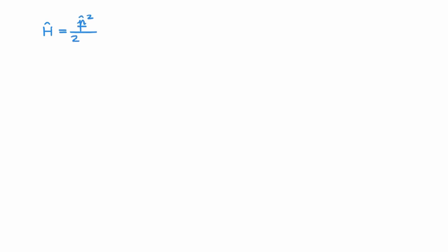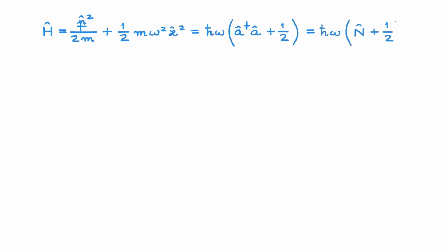The Hamiltonian operator for the quantum harmonic oscillator is given by the kinetic energy, which is proportional to the momentum squared, plus the potential energy, which is proportional to the position squared. We can also rewrite this Hamiltonian in terms of the ladder operators or in terms of the number operator. The eigenvalue equation for the Hamiltonian is this, where E sub n are the energy eigenvalues and n the energy eigenstates.